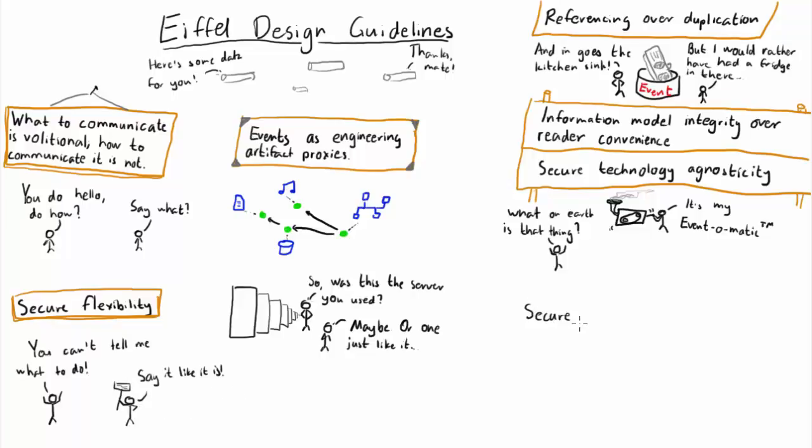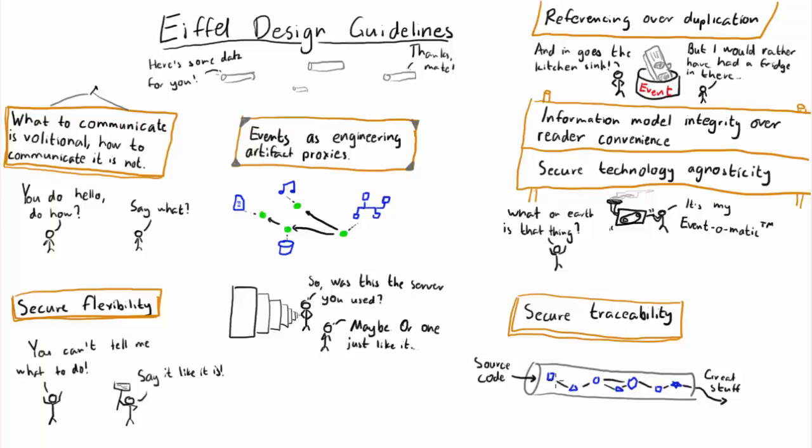Last but not least, secure traceability. An extremely important aspect of Eiffel is that it provides unambiguous trace links between multiple types of engineering artifacts throughout the pipeline. This lets you see where your software went or where the software you're picking up came from, who tested it where and how, who integrated it into what, and which bug fixes were made or requirements implemented.